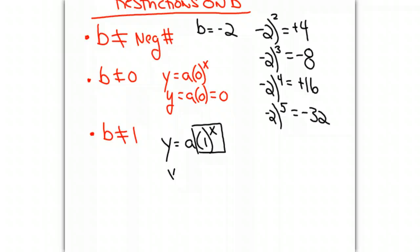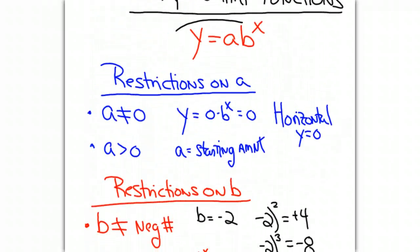So these are the restrictions that we put on a and b in our function, y equals a times b to the x, so that we will create an exponential function and not some other kind of function.